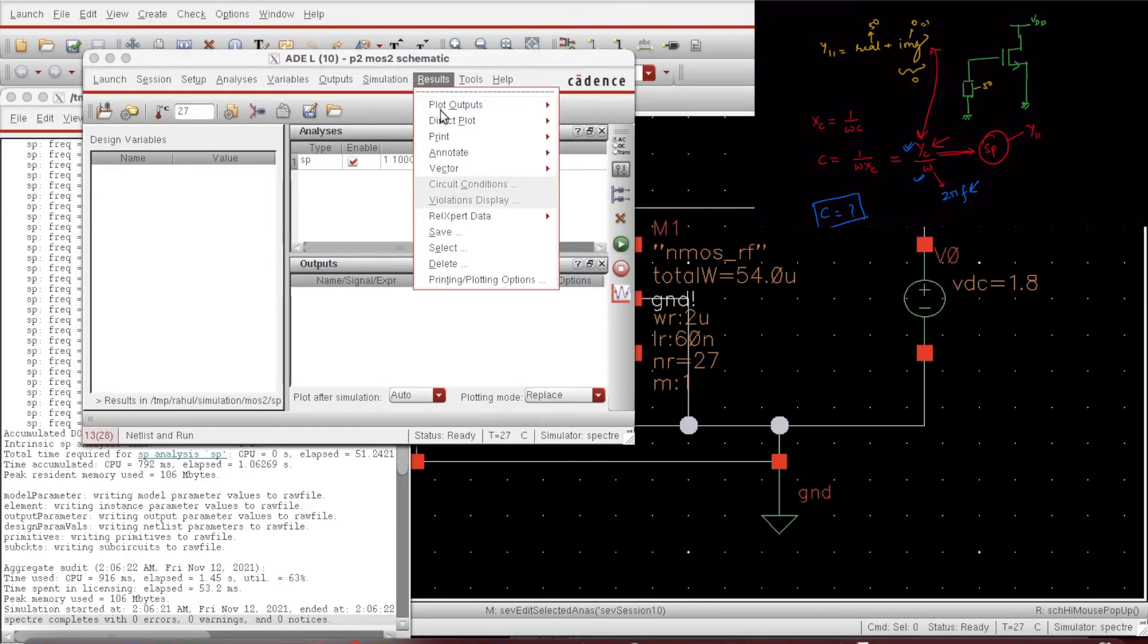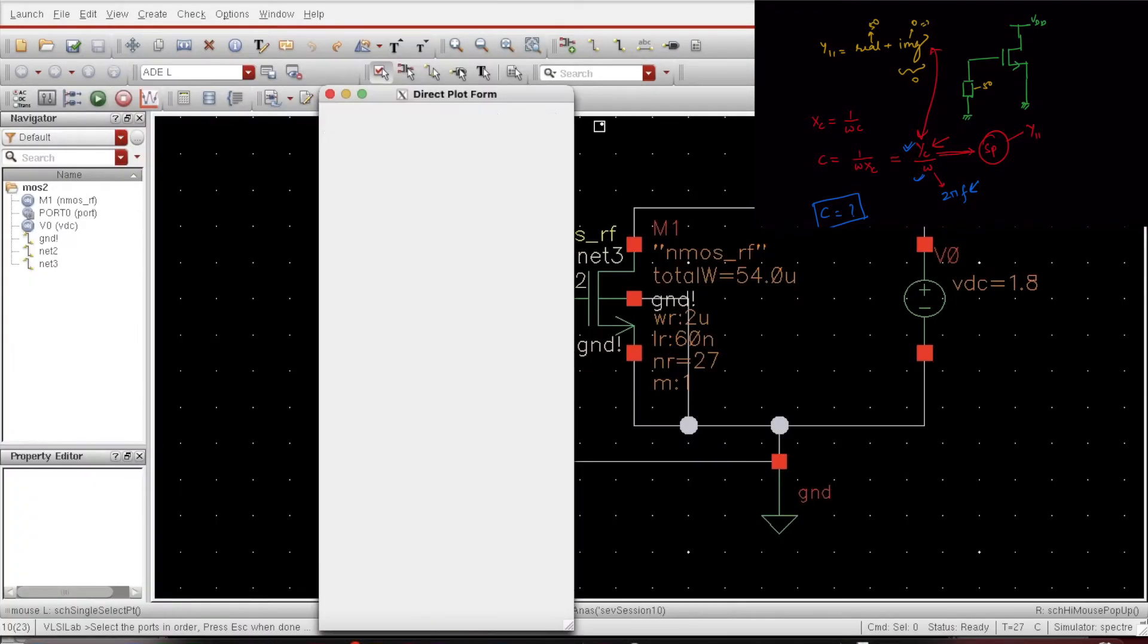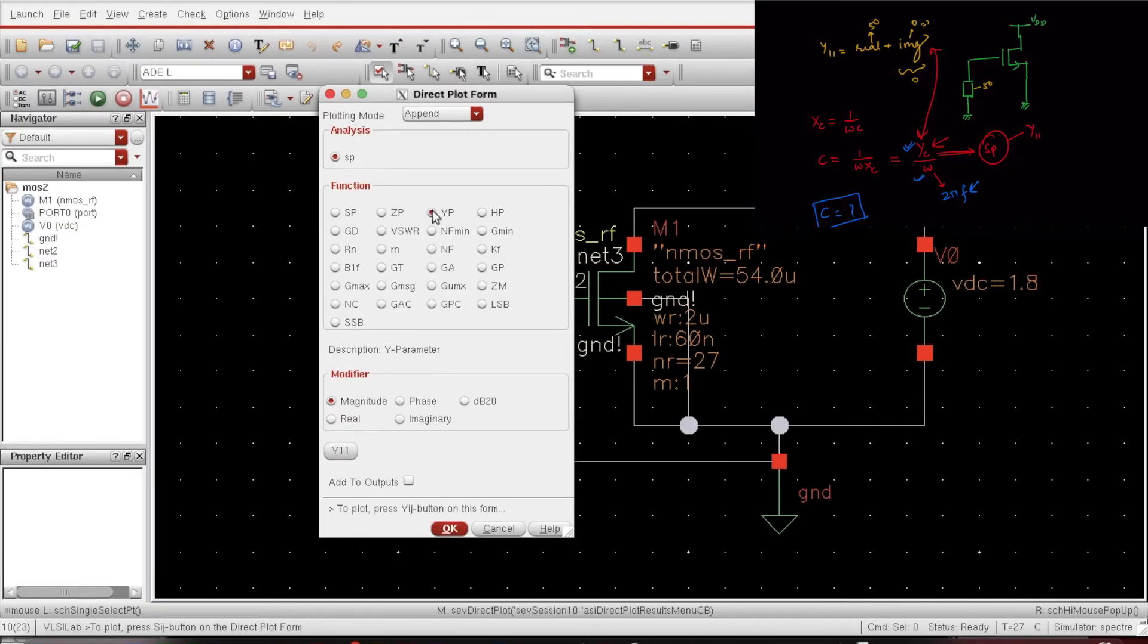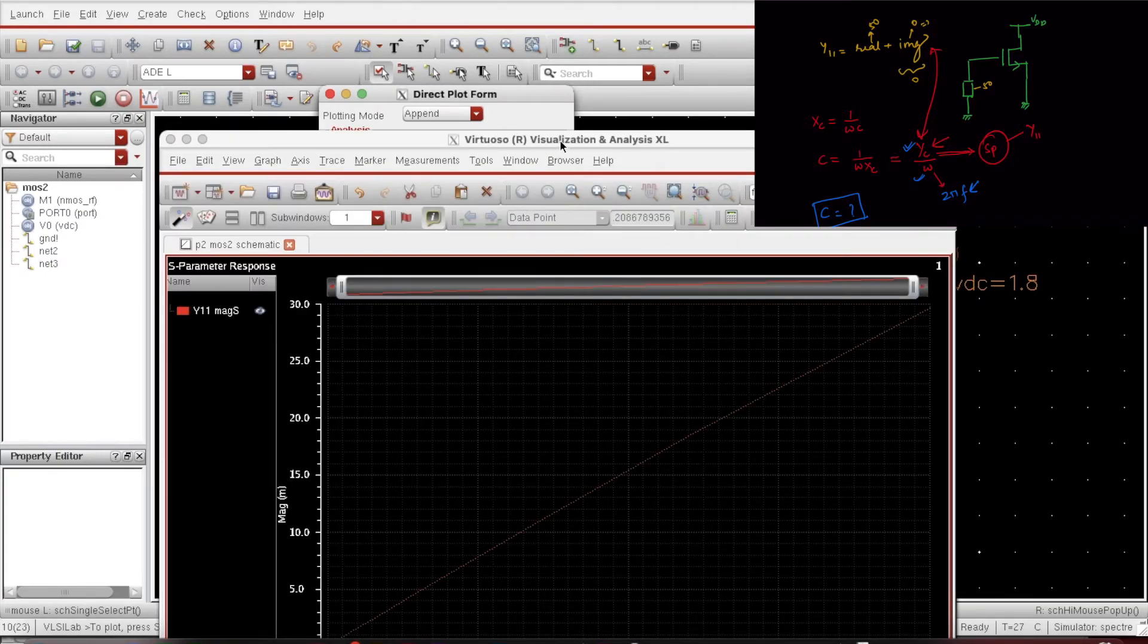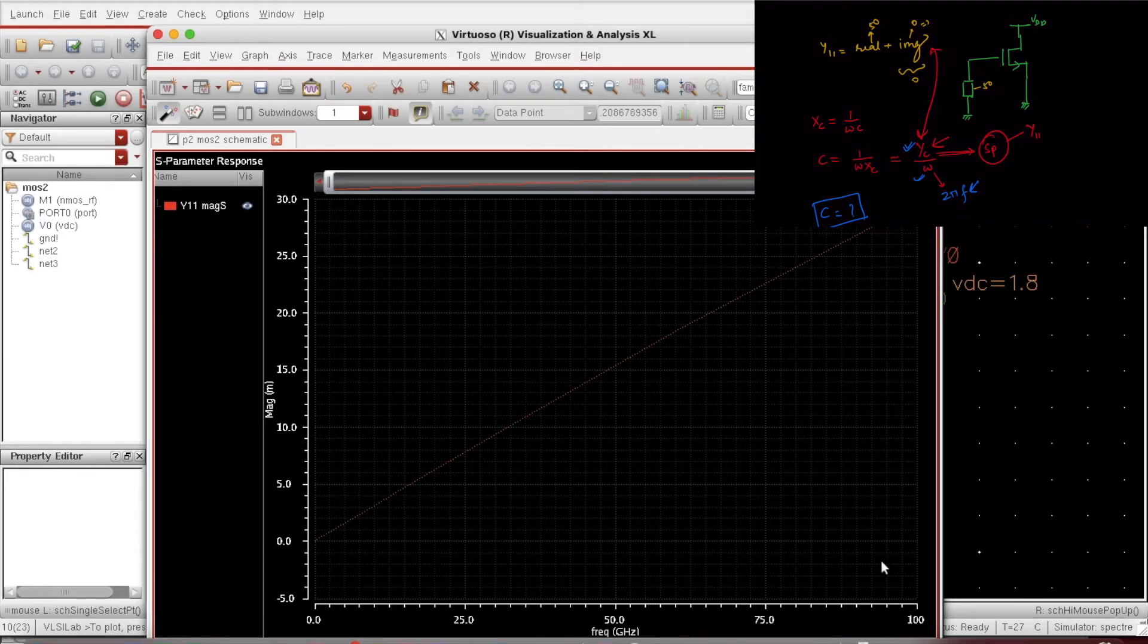After that I will go to results, direct plot, main form. I will see the Y parameter here, so Y11. I click on this and it will give me the Y parameter with respect to frequency range. That non-zero imaginary part - suppose I will be looking at this point, at 39 gigahertz. At 39 gigs it's around 12 milli.